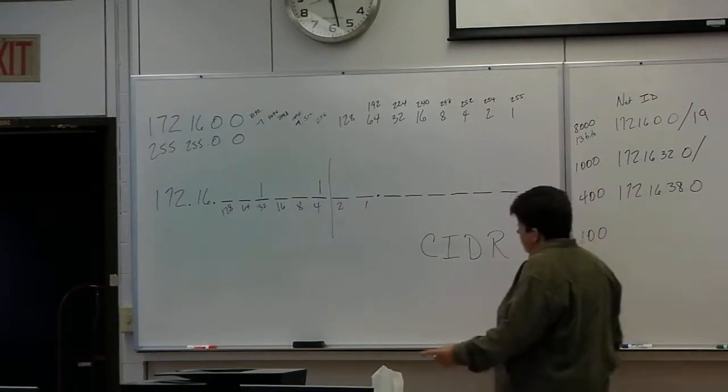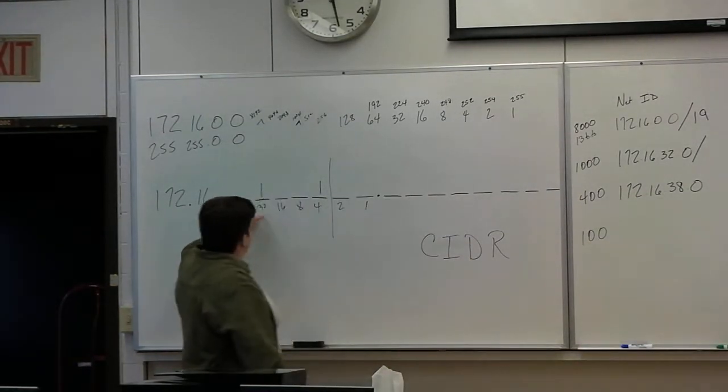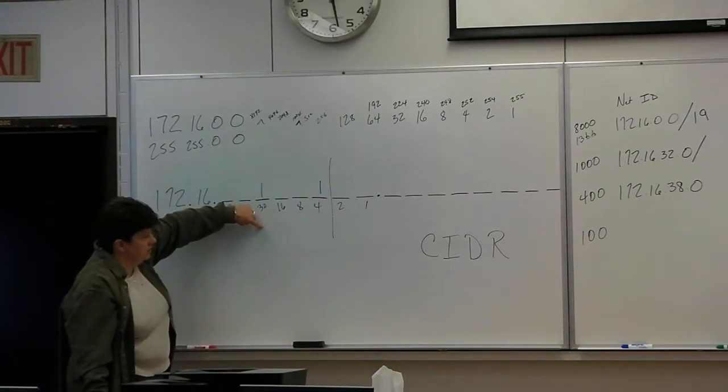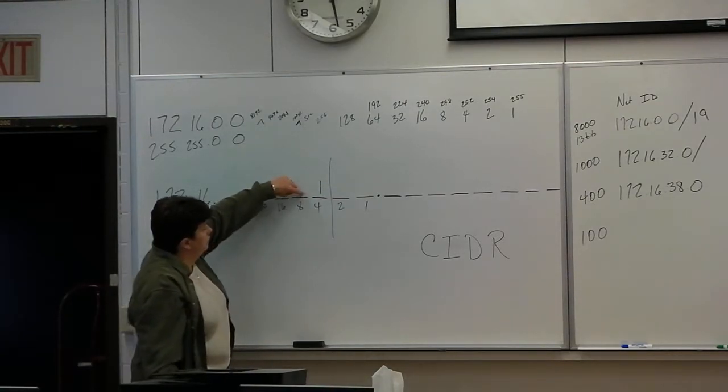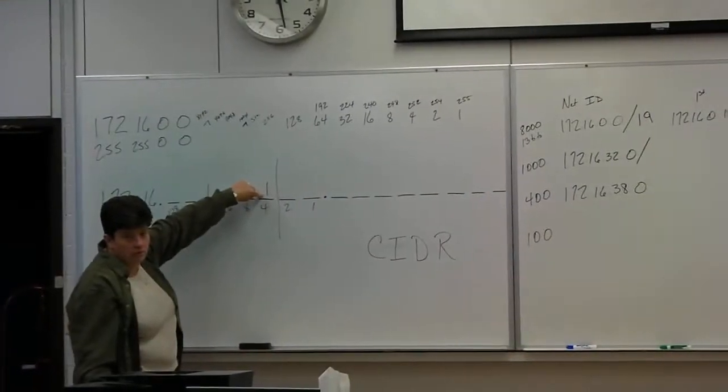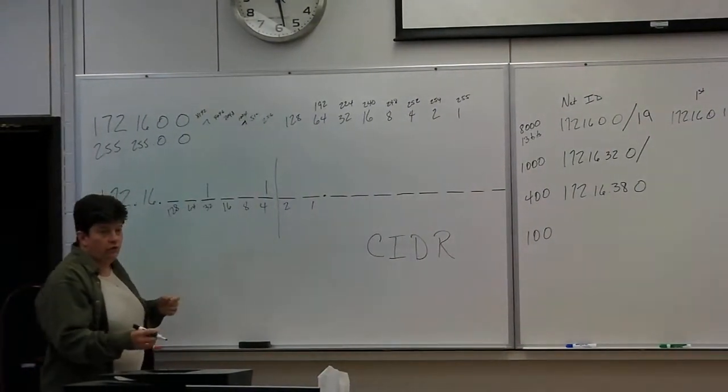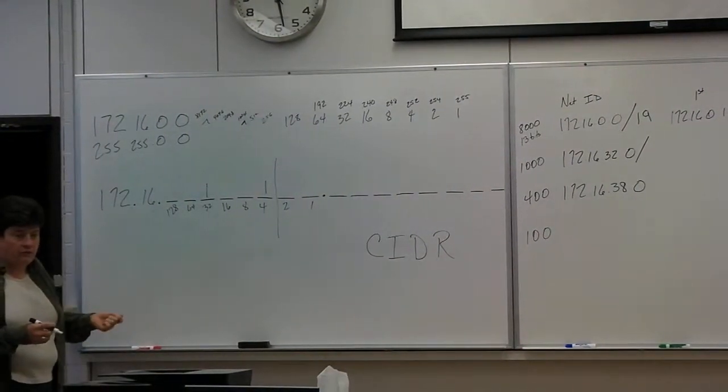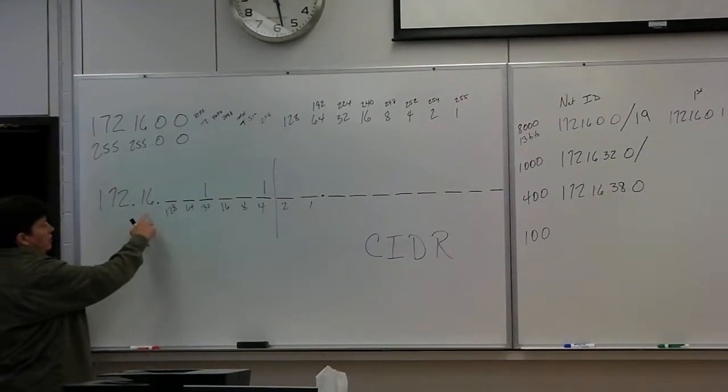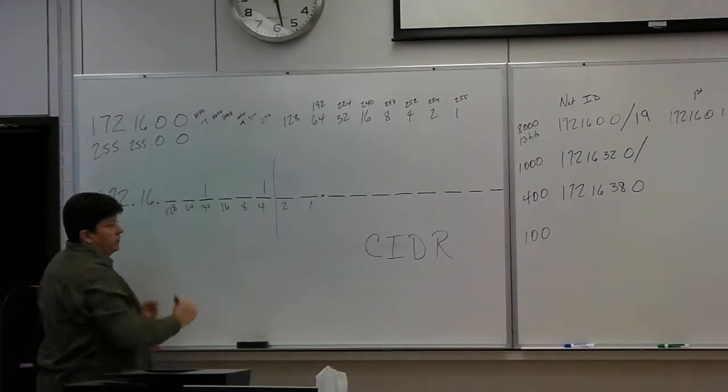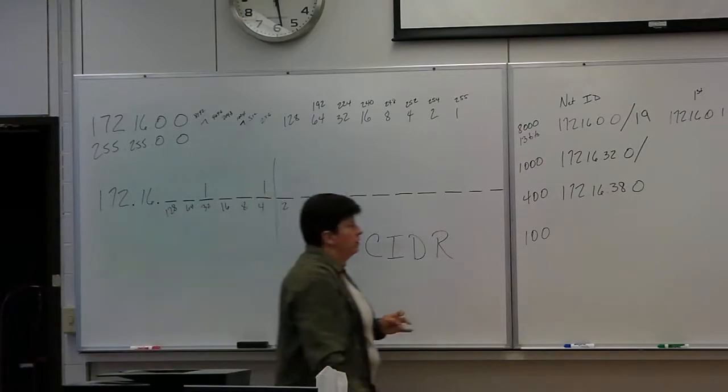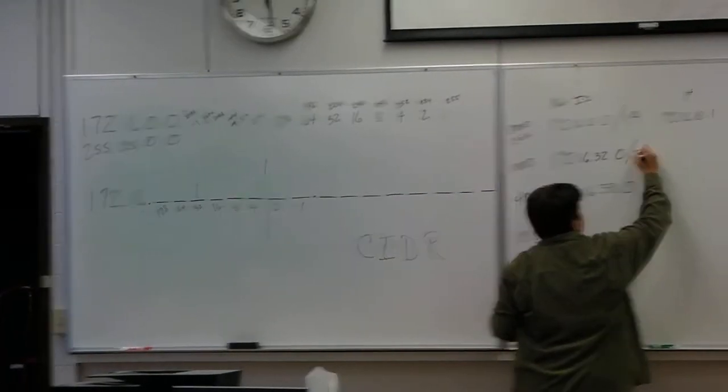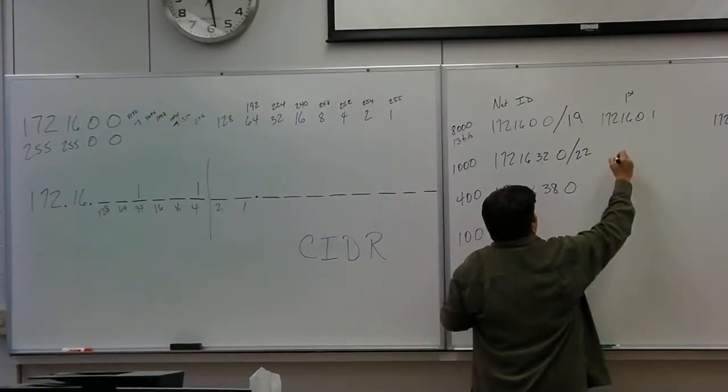And now my new subnet mask. If I was at 19 bits here, 20, 21, 22. There are now 22 bits in my subnet mask. 8 here, 8 here, 6 there. So now this is a slash 22. My first usable. My broadcast. Take one off of that.